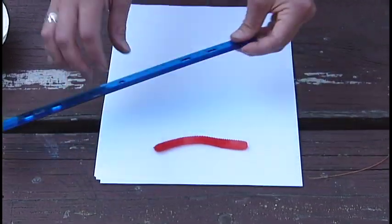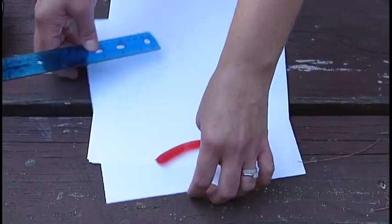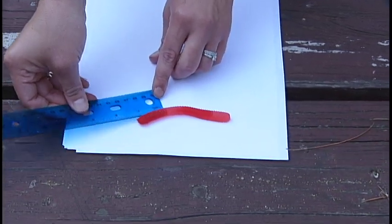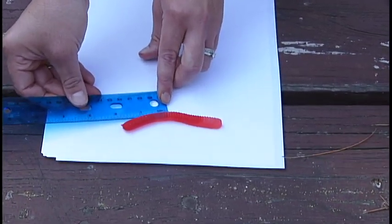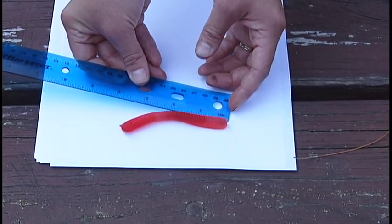Now we're going to take our ruler and we're going to measure each one of the different segments. In my worm, I have red and pink. The first segment is about an inch and a half. The next segment is about three-fourths of an inch. The third segment is right at one inch and the last segment is about a half an inch.